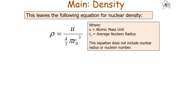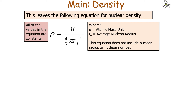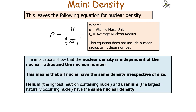We know that u is the atomic mass unit and R₀ is the average nucleon radius. This equation does not include the nuclear radius or the nucleon number — in fact, all of the values in the equation are constants. This shows firstly that the nuclear density is independent of the nuclear radius and the nucleon number, as neither appear in the final equation.